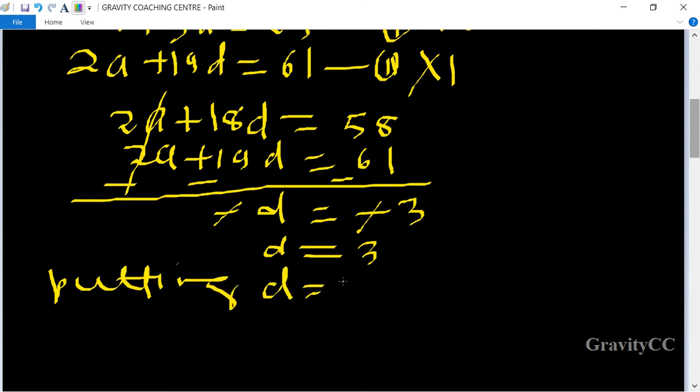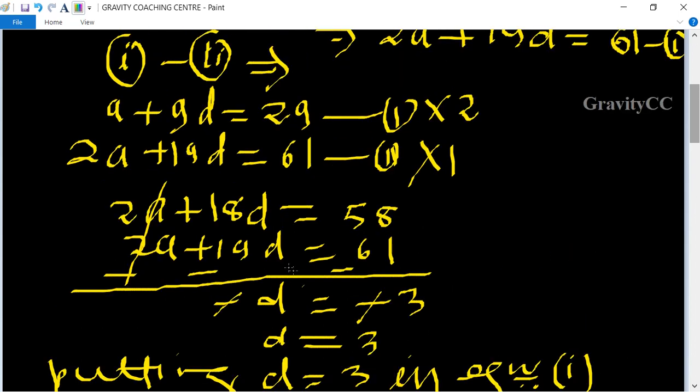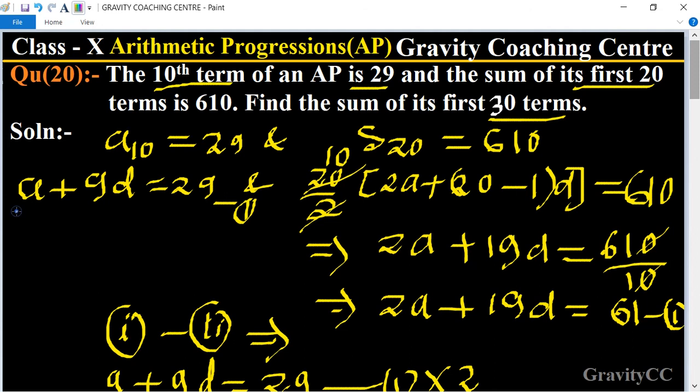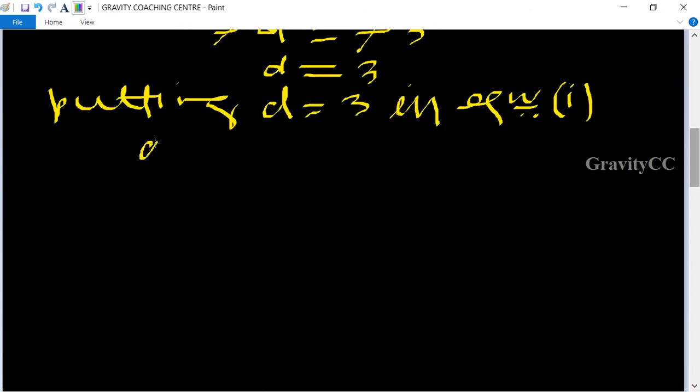Now putting the value of d in equation 1. The first equation is a + 9d = 29.